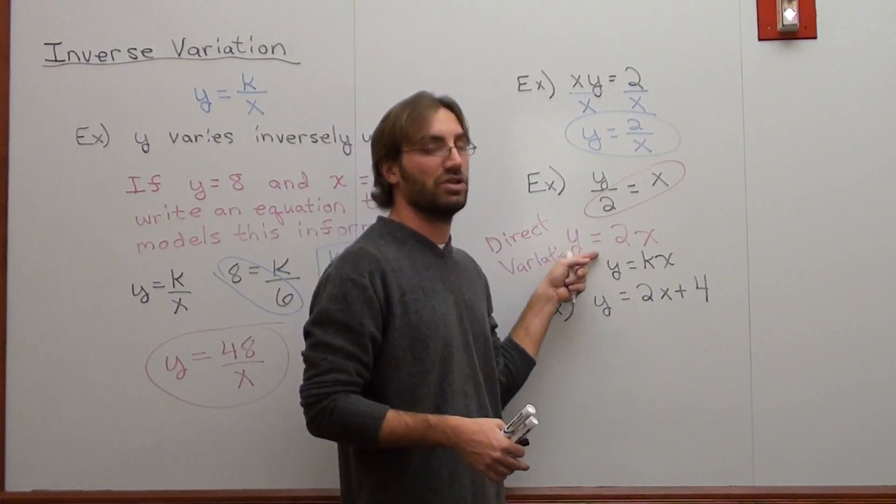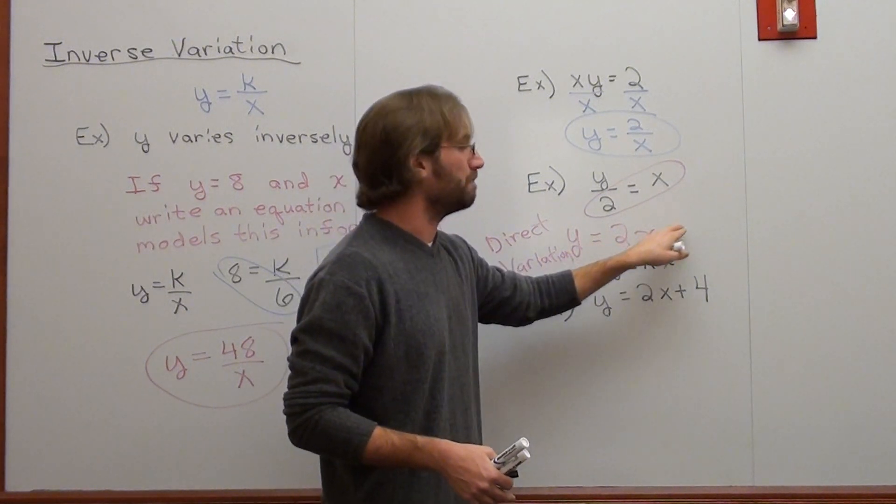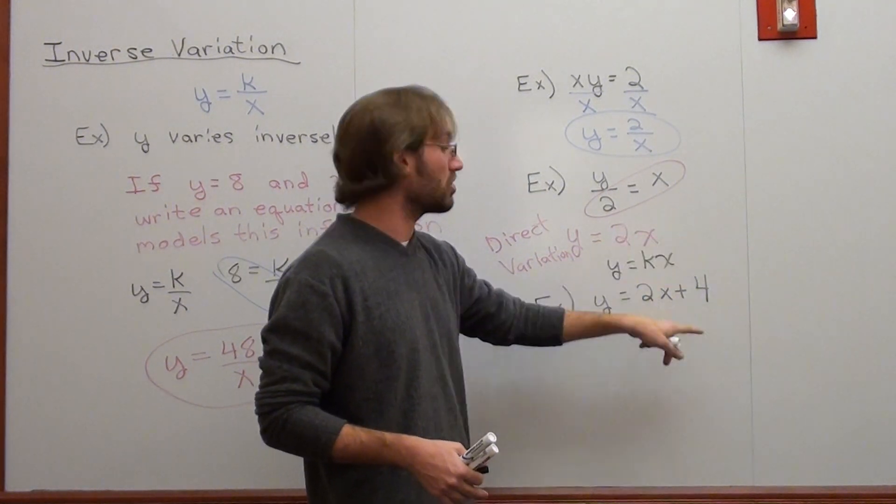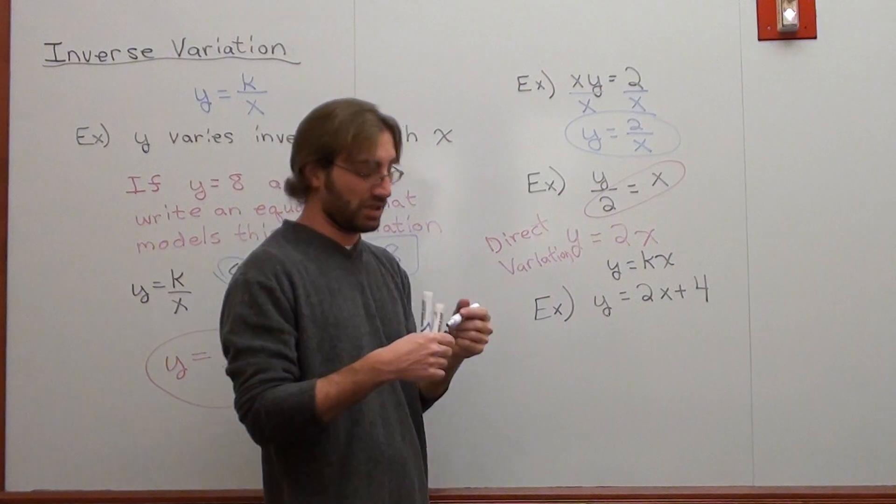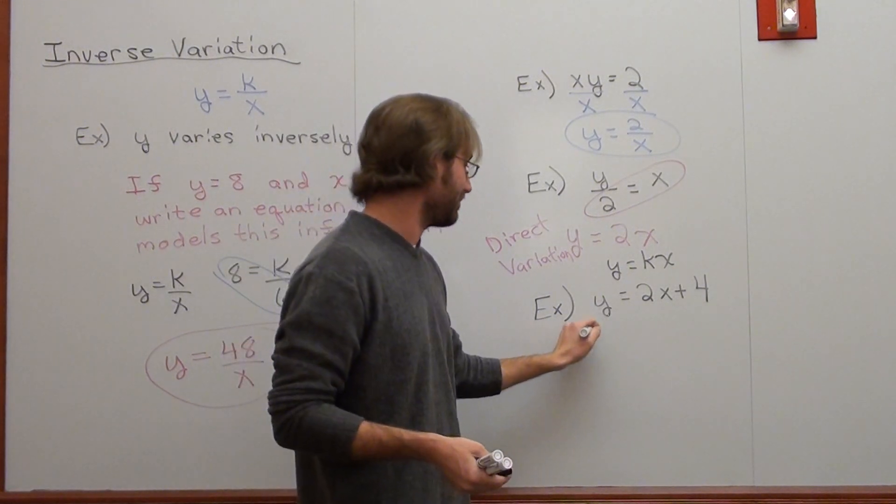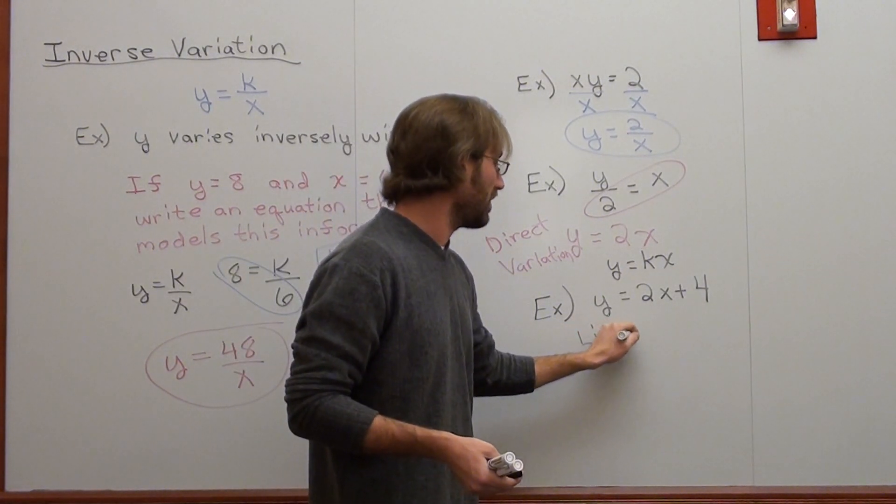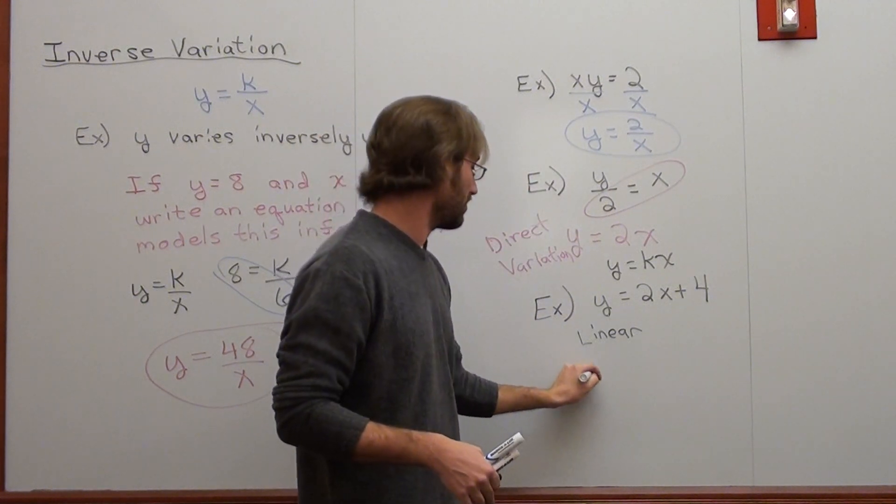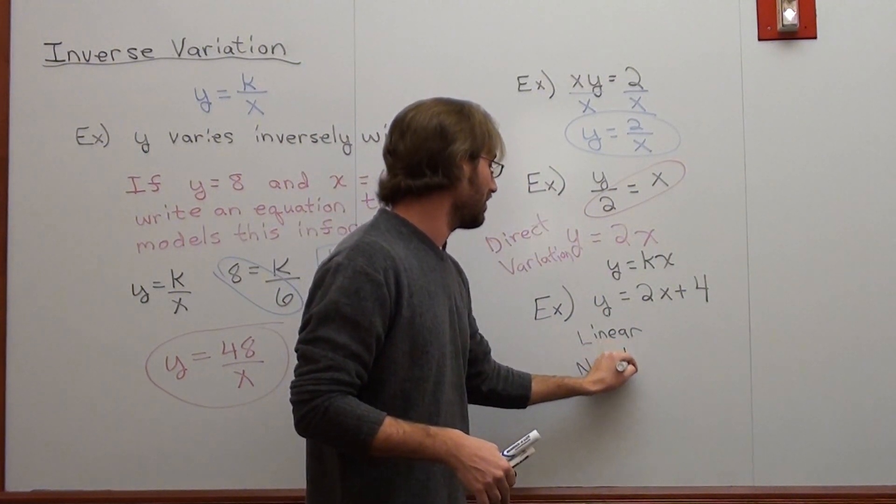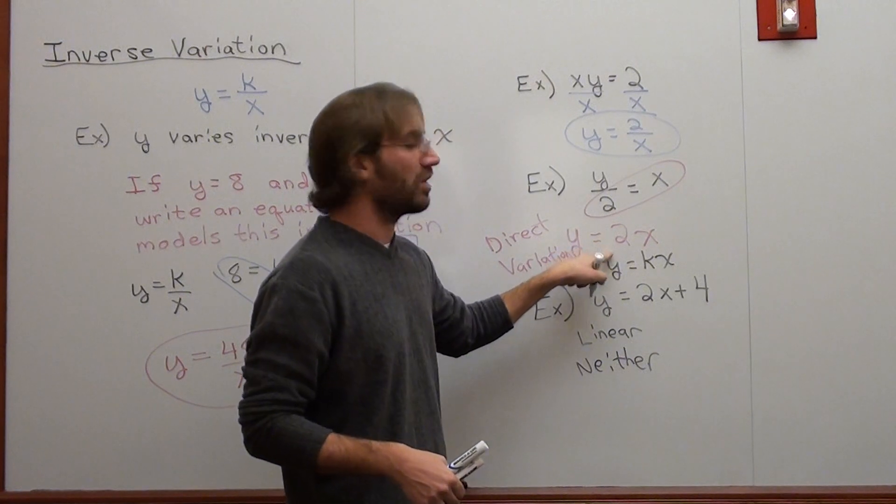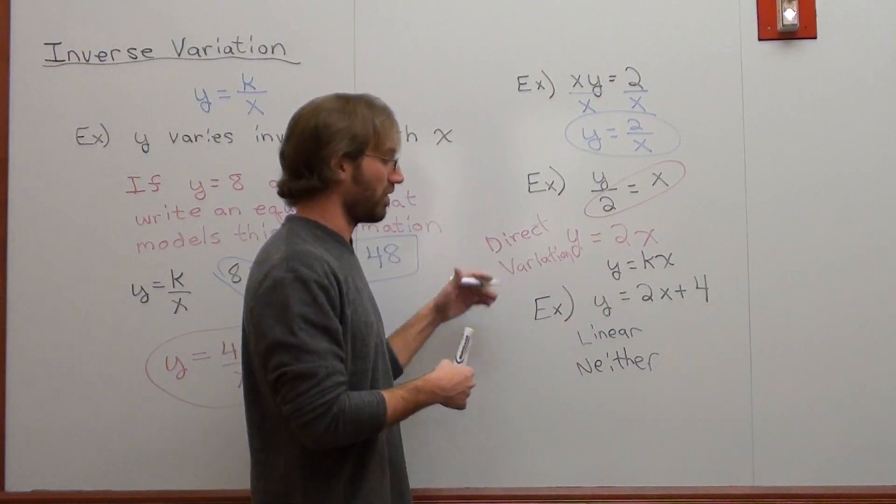Well, direct variation is a linear function too, but it's y intercept up to zero. This one is four, so that doesn't work. So this is just linear, and it's neither direct nor inverse. Although this one right here, y equals 2x is linear, but it's a direct variation.